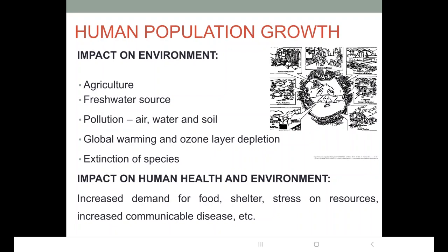Runoff from the fields carrying chemicals, particularly nitrates, reaches nearby water bodies and causes eutrophication — a condition where the surface of the water is covered by extensive growth of plants and algal blooms.